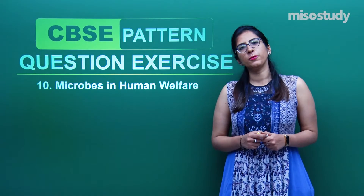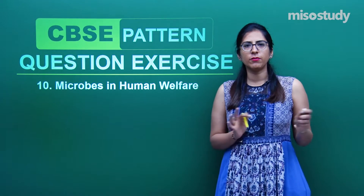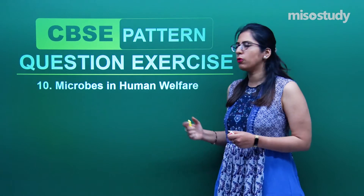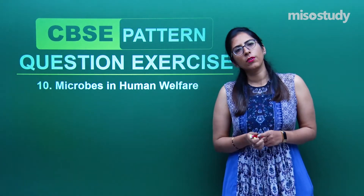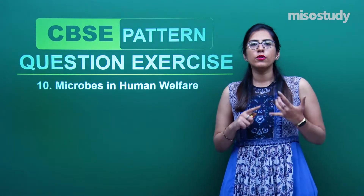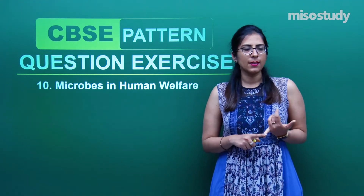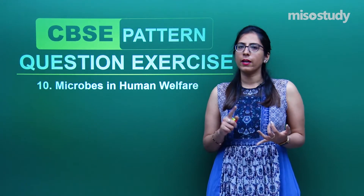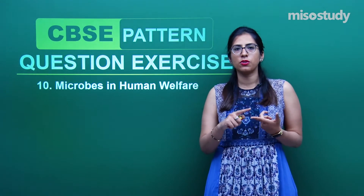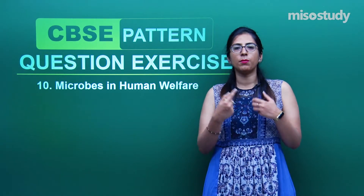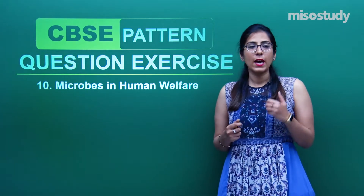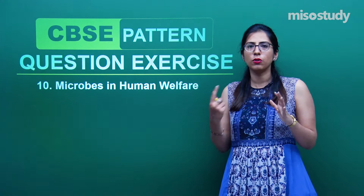Hello students, a very warm welcome to this study session. Today I'll be talking about the CBSE pattern question exercise from Chapter 10: Microbes in Human Welfare. We have studied the different types of microbes important for household work such as production of curd and cheese, and in industries for alcohol production, organic acids, antibiotics, healthcare supplements, and enzymes.